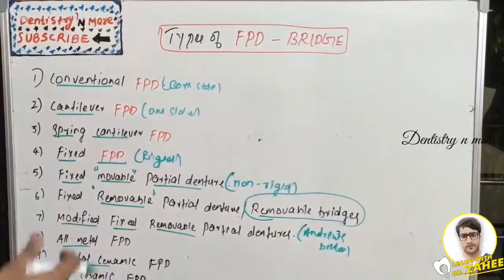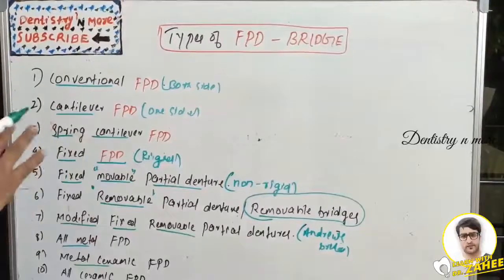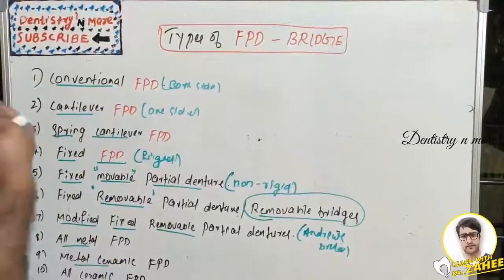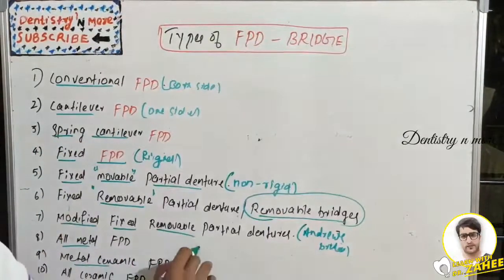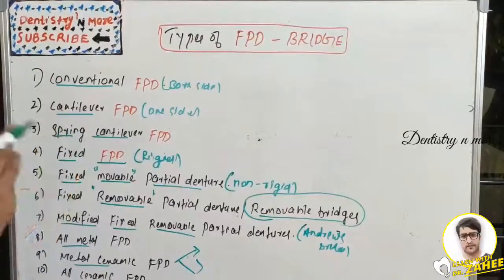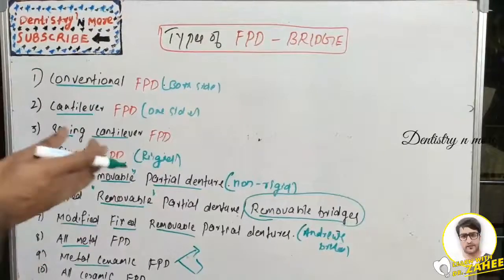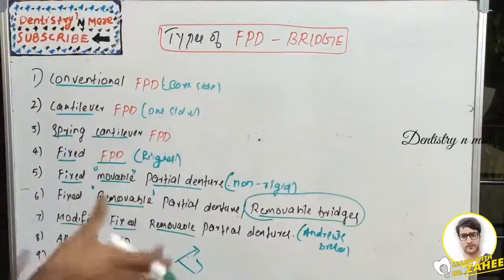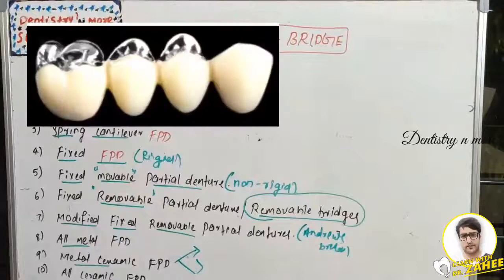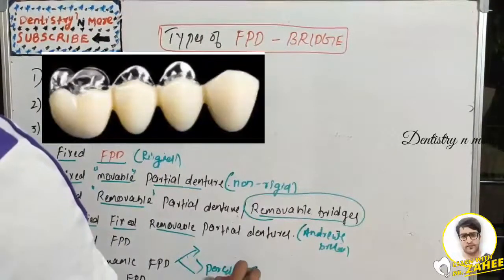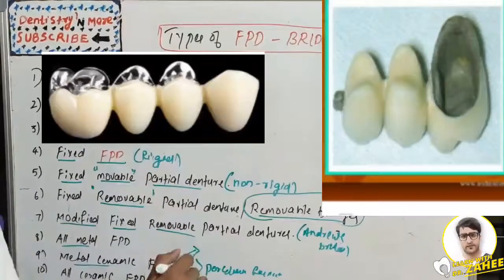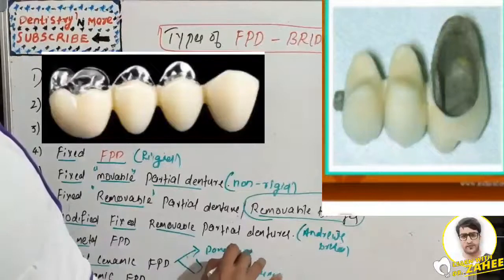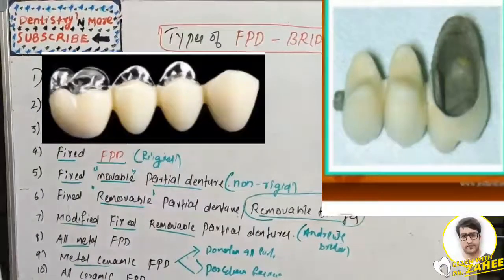In metal-ceramic FPD, the core of the prosthesis is made of metal and the external surface is fabricated using ceramic. The metal is bonded to the ceramic chemically, mechanically, and ionically. Metal-ceramic FPDs can be of two types: in the first type, metal is surrounded by porcelain on all surfaces; in the second type, the lingual and occlusal surface is formed by metal while only the labial and gingival surfaces are formed by porcelain — termed porcelain facing or porcelain veneer.